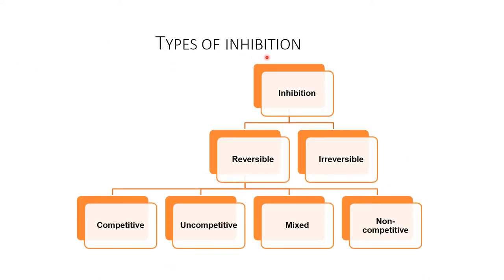Types of inhibition: inhibition can be divided into two types — reversible and irreversible. Reversible inhibition is further divided into four types: competitive, uncompetitive, mixed, and non-competitive.